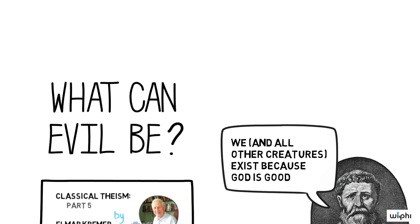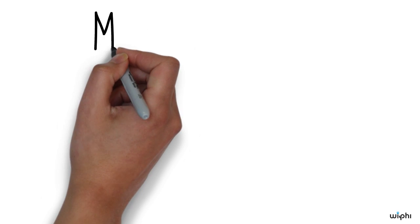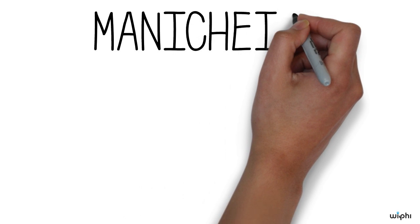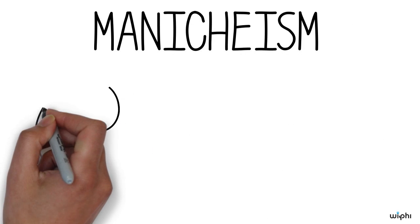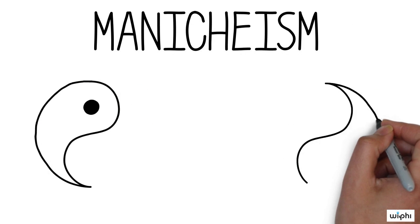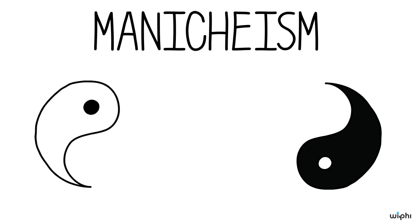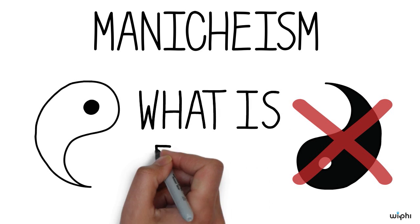The question forced itself on Augustine, partly because he was a convert to Christianity from Manichaeism, according to which there are two gods, a good God and an evil God. Once Augustine became convinced that there is only one God, and he is good, the question, what is evil, was unavoidable.